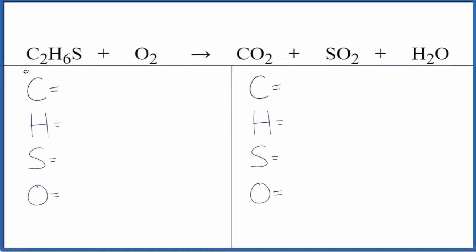Let's balance the equation C2H6S plus O2. This is dimethyl sulfide plus oxygen gas. This would be a combustion reaction. We have this compound here combining with oxygen, so combustion is the type of reaction.